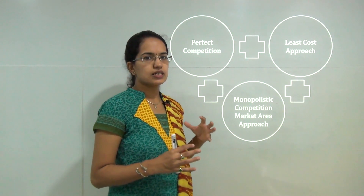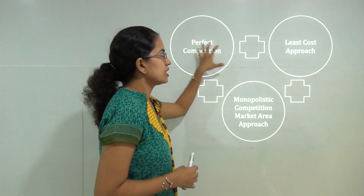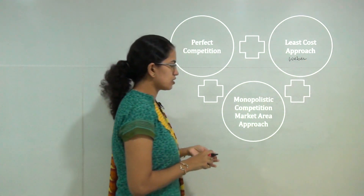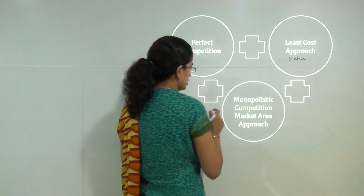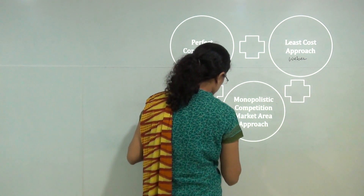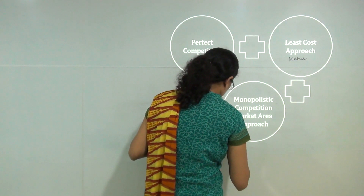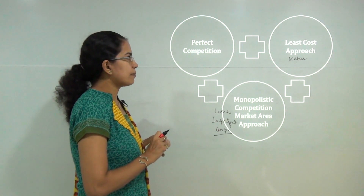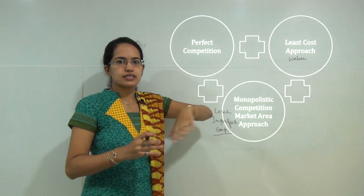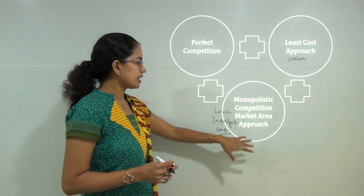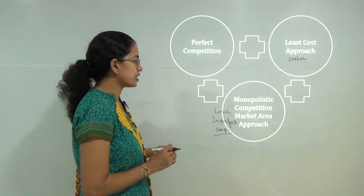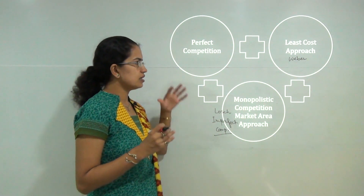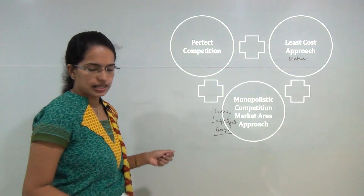Smith's theory is a merger of three concepts: perfect competition, the least cost approach as propounded by Weber, and the monopolistic competition or market area approach as given by Loesch, which talks about imperfect competition. What Smith believed was that in reality market areas are not uniform, so we cannot always apply Weber's theory. He tried to merge these three concepts under one head and based on that he laid down certain assumptions.